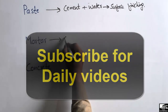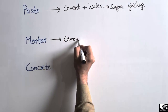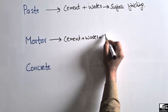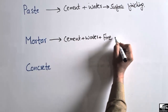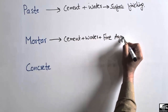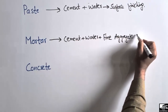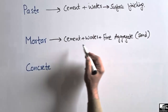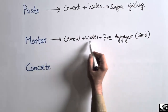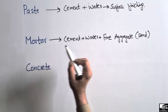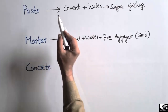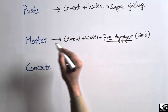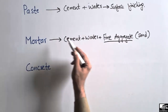Mortar is a combination of cement, water, and fine aggregate — or sand. These three combine together to form mortar. Mortar has higher strength than that of paste, because with the addition of fine aggregate the strength of the mortar increases.